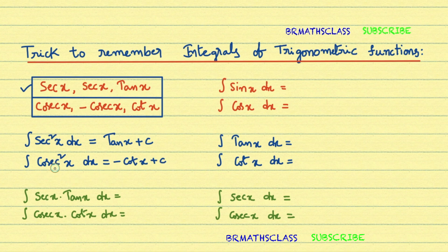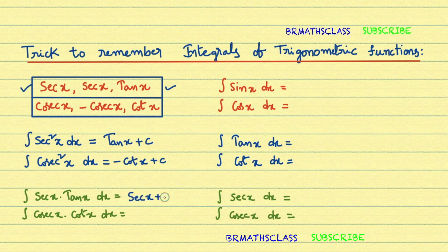Now, integral of secant x times tan x dx: secant x times tan x — you observe the first row of the box: secant x and tan x are accounted for, and what remains is secant x. So integral of secant x times tan x dx is secant x + c.